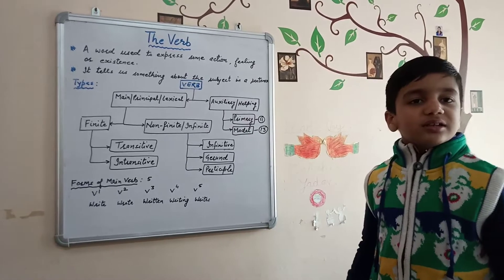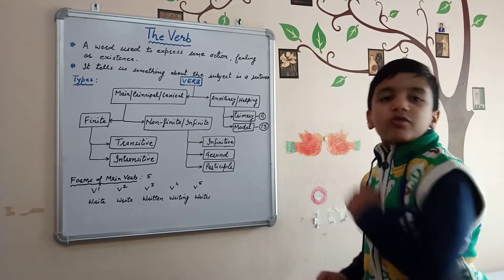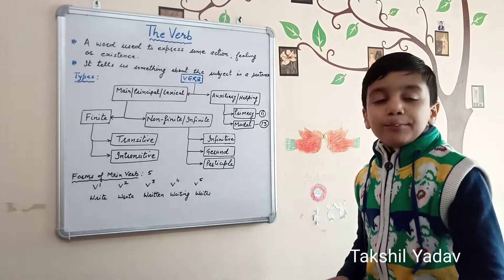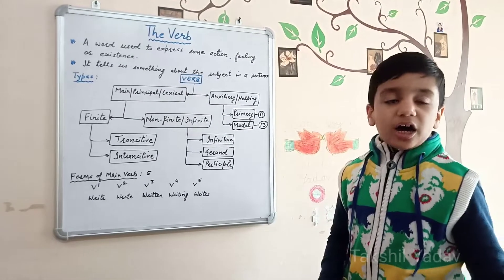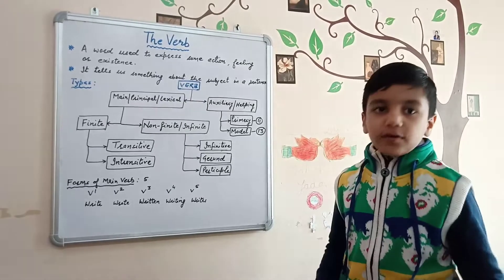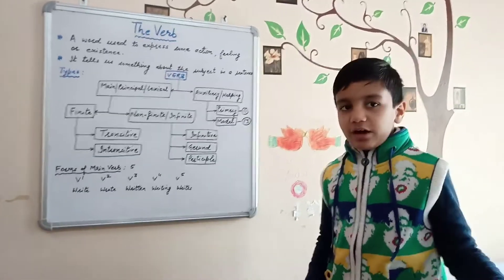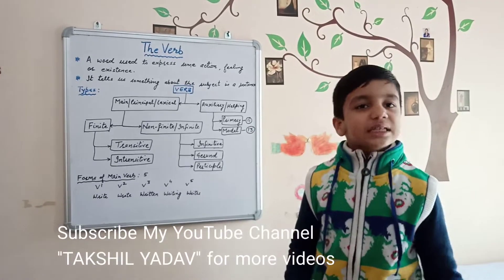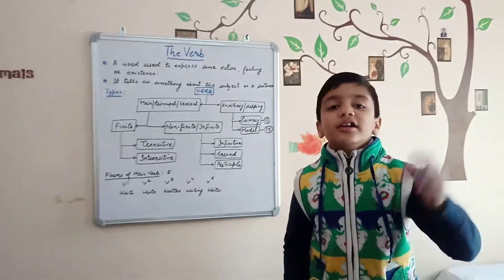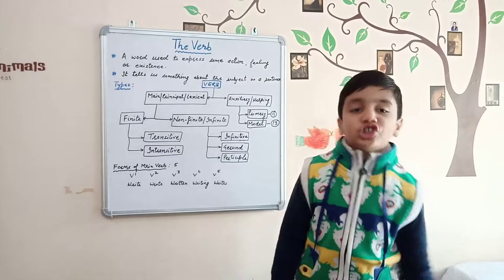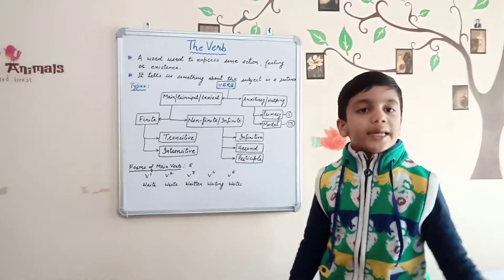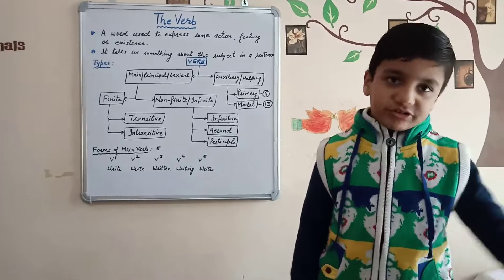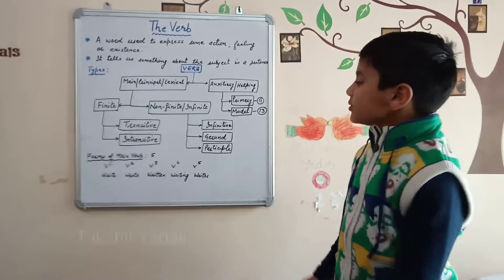Some examples of primary auxiliaries are: is, am, are, was, were, has, have, etc. And examples of modal auxiliaries are: can, could, shall, should, may, might, will, would, etc.